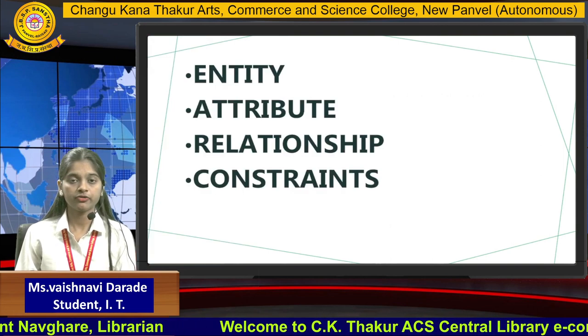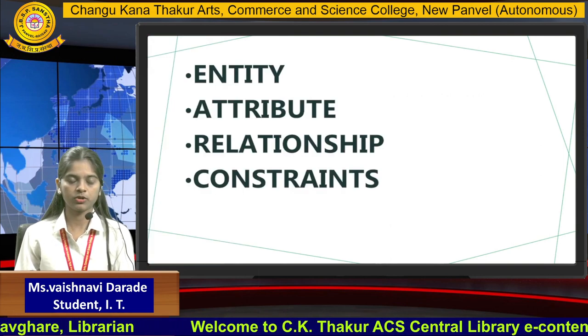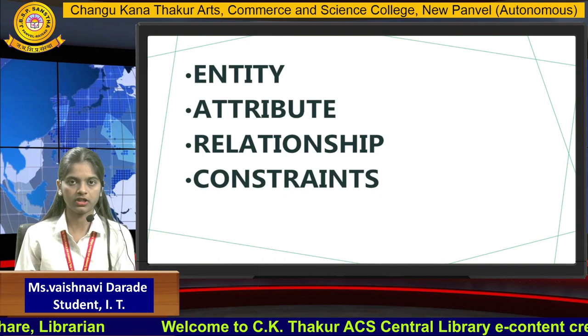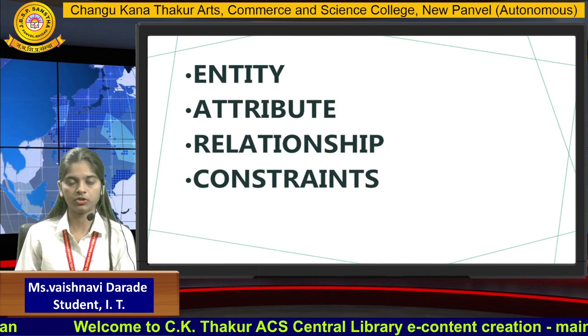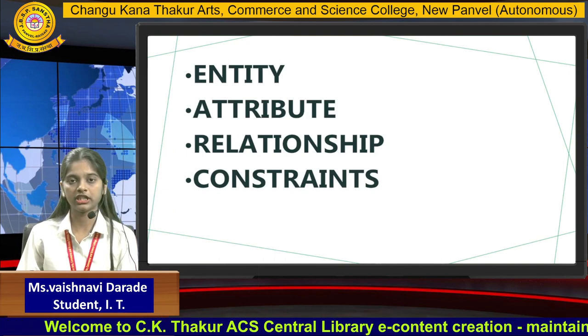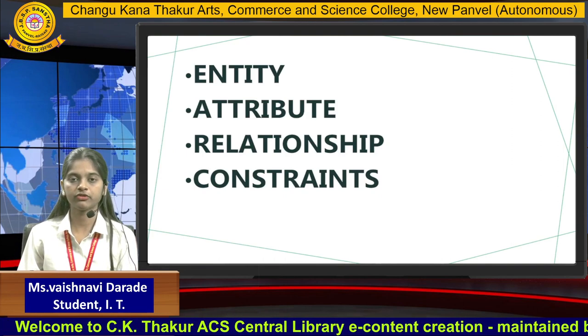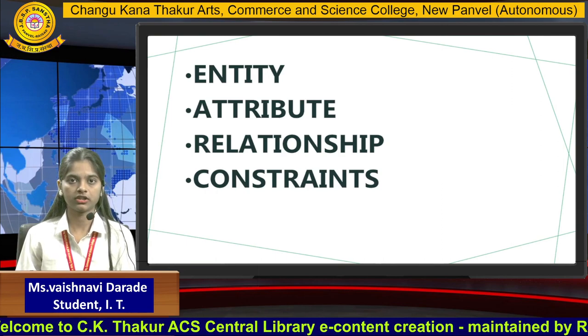There are four basic building blocks of a data model. First, entity. Second, attribute. Third, relationship. And fourth, constraint.